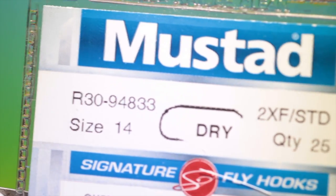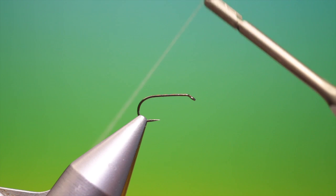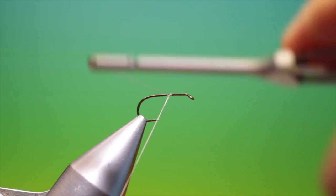Okay, we'll start with the Mustad R30 size 14 dry fly hook. Some grey tying thread. This is the parachute Adams.